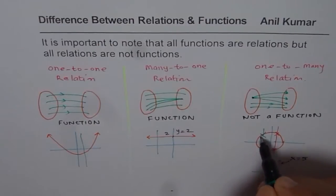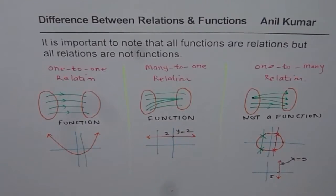Here, this intersects at two points and therefore, it is not a function. And here, it intersects at infinite points and therefore, it is not a function.